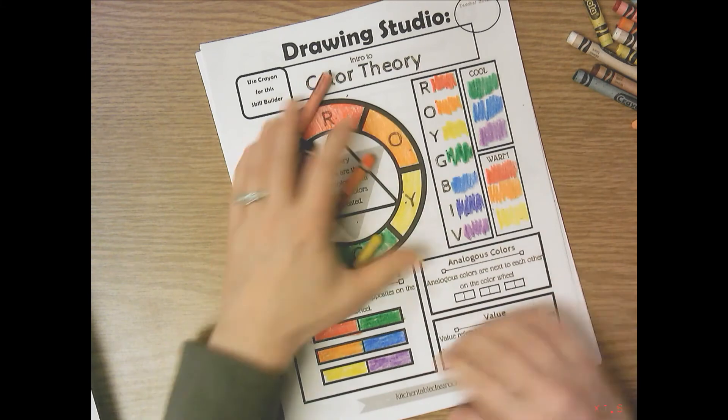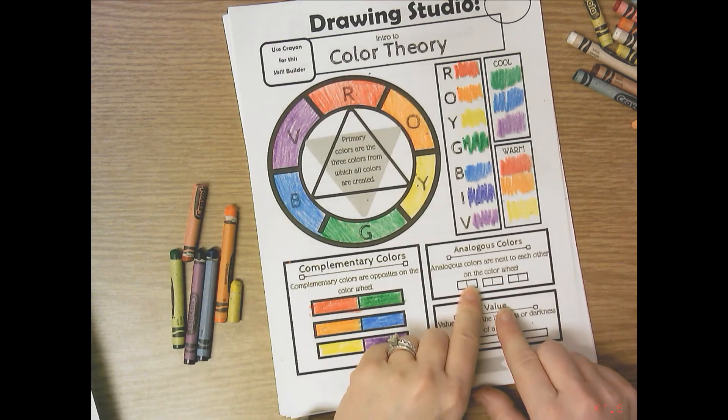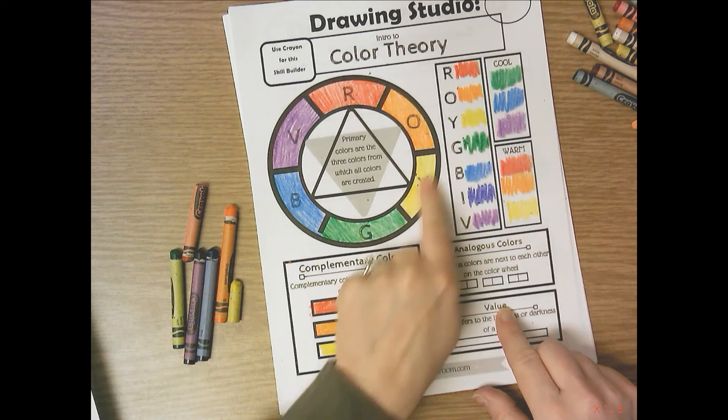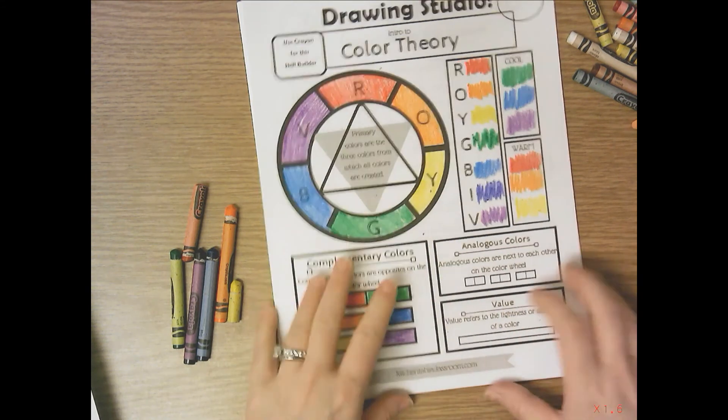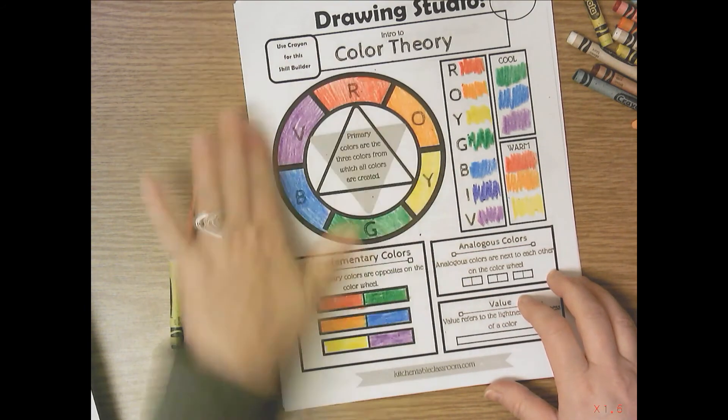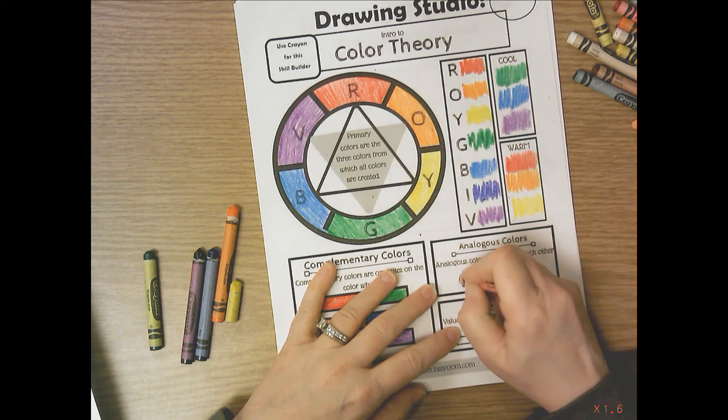And then analogous colors are next to each other on the color wheel. So you're going to pick colors that are next to each other on the color wheel. Three sets. You can make more than three sets of analogous colors from this color wheel, but you get to pick the three that you want to do.